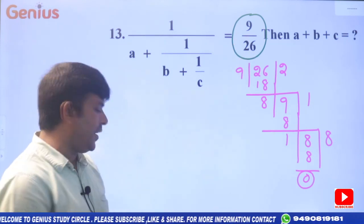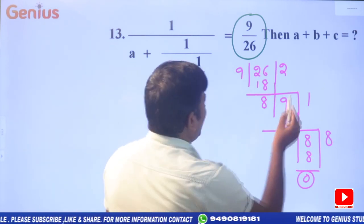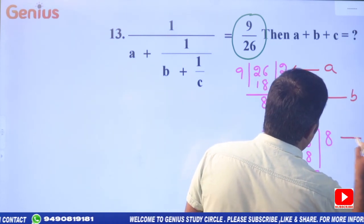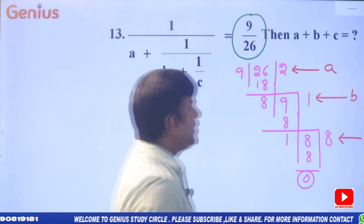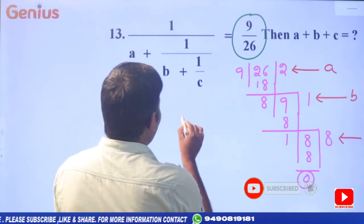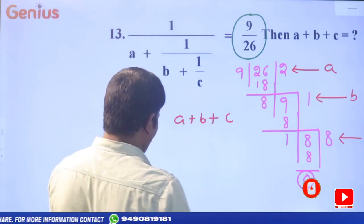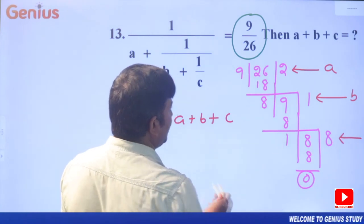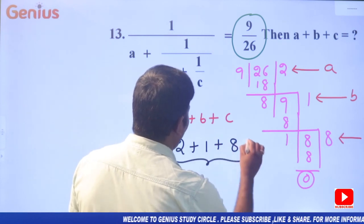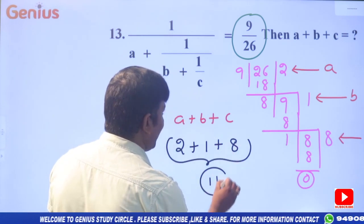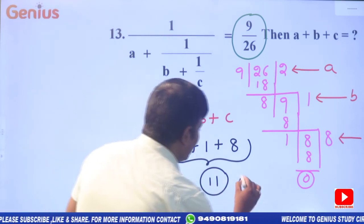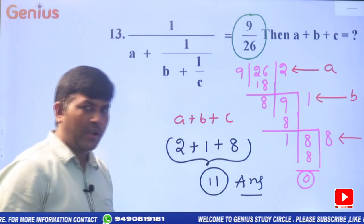Continuing: divide 9 by 8 — 8 ones are 8, remainder 1. Then divide 8 by 1 — 8 ones are 8, remainder 0. Reminder is 0, so solve is complete. From the HCF process, the quotients give us a=2, b=1, c=8. So the final answer: a+b+c = 2+1+8 = 11.